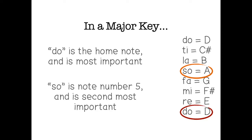Once we have the major key, we know that do is the home note. That's the most important note in that key. And also, do you remember when we talked about triads, we also said that note number five of the scale is the second most important. So if we were in a major key, then do would be the most important and so would be the second most important.